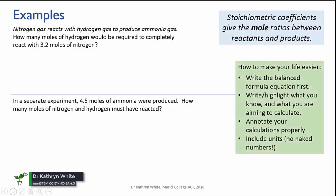So here are two problems. If you're feeling confident, pause the video now and try to solve them for yourself before I go through them. Okay, let's try the first one. So we have nitrogen gas reacts with hydrogen gas to produce ammonia gas. How many moles of hydrogen would be required to completely react with 3.2 moles of nitrogen?